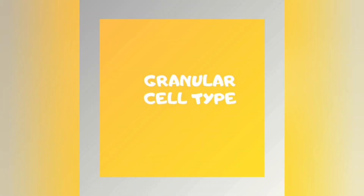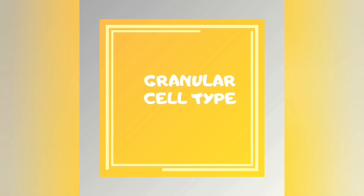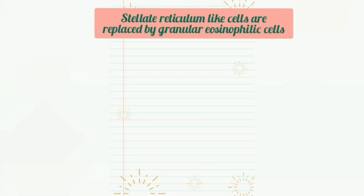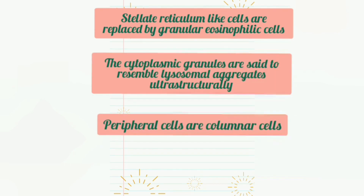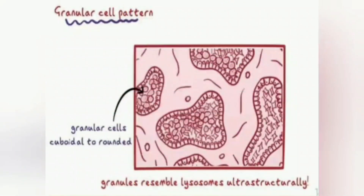Granular cell type of ameloblastoma: here the stellate reticulum-like cells are replaced by granular eosinophilic cells. These cells are said to resemble lysosomal aggregates ultrastructurally. The peripheral cells are lined by cuboidal or columnar cells, as shown in the figure.